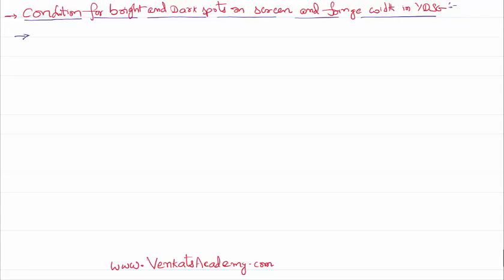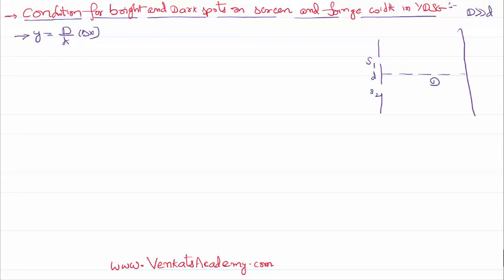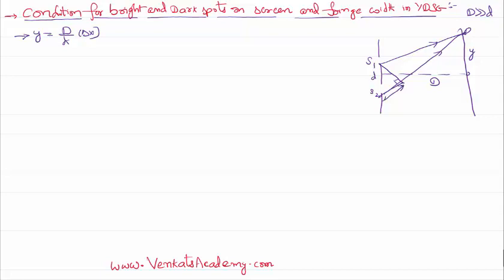In the previous video lesson we have derived an equation that y is equal to capital D by small d times delta x. To show you what these values are — for reference, this is slit S1, slit S2, and this is the screen. The distance between the slits and the screen is capital D, where capital D is much greater than small d. There is a point P on the screen where two waves meet and produce a bright or dark spot. This y is the position of P, and delta x is the path difference — S1P is greater than S2P by that value.